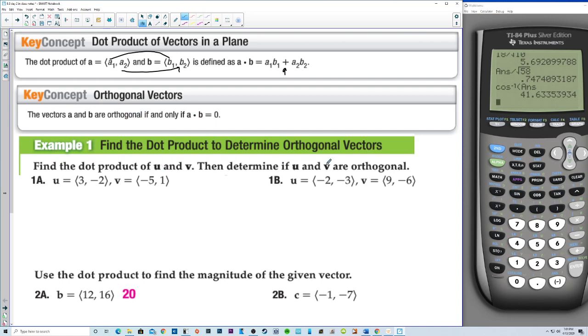Find the dot product of u and v, then determine if u and v are orthogonal. We're going to multiply the x's together, so negative 15, and then add and multiply the y's together, that's negative 2. The dot product is negative 17, and no, these are not orthogonal.